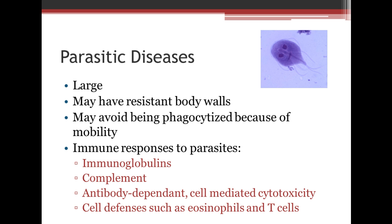The next category is parasitic diseases. Parasites are usually large and have very resistant body walls. In most cases they avoid being phagocytized because they are very mobile — as seen in this image, a parasite with a flagellate that allows it to move through solution or body fluid. Immune responses to parasites include immunoglobulins, the complement system, antibody-dependent cell-mediated toxicity, and cells like eosinophils and T-cells.